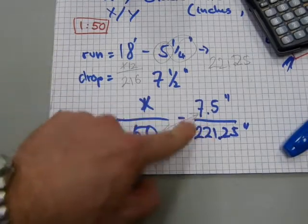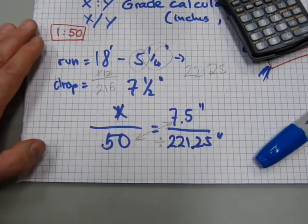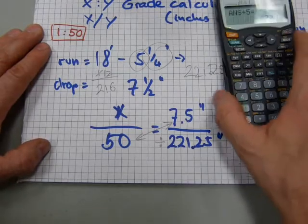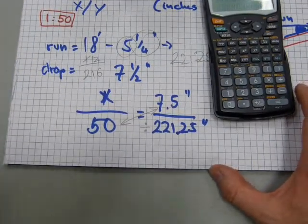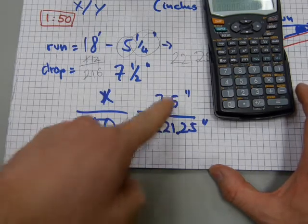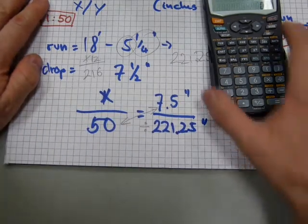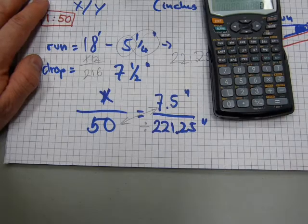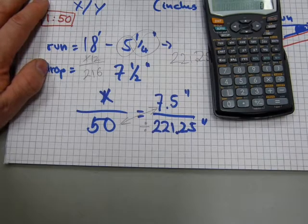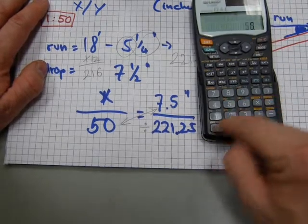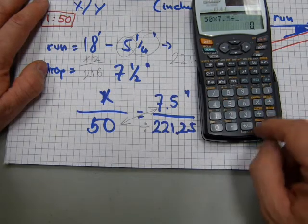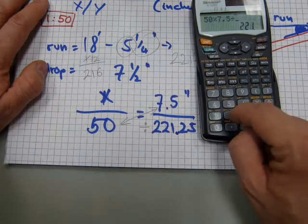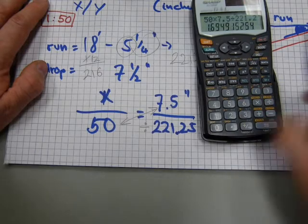You can do division first and cross multiply after, but usually, it's less trouble if you cross multiply first. Not so much on a calculator, but sometimes even so, because division would typically give you infinite decimals, and if you multiply that, you're multiplying the potential of error. So, let's go 50 times 7.5 divided by 221.25 equals 1.69.